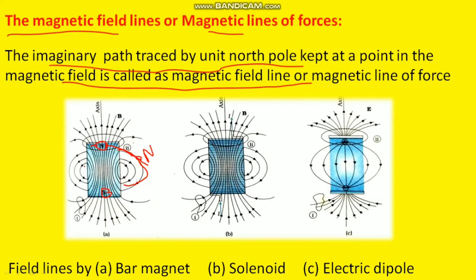The magnetic field lines in this figure, due to a bar magnet, start from the North Pole on the outside and move towards the South Pole. But inside the magnet, they travel from South to North. So outside the magnet, field lines go from North to South, and inside they go from South to North.